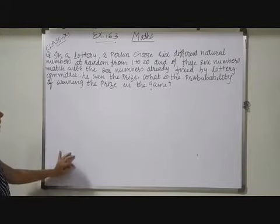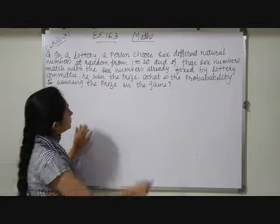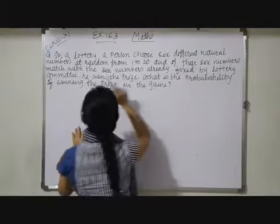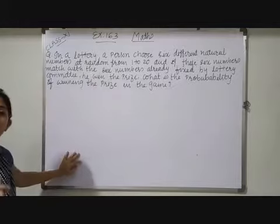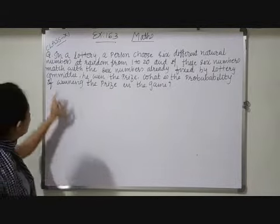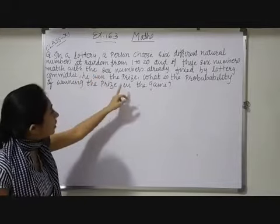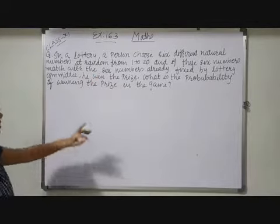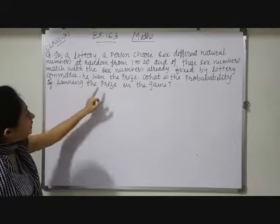Here a question is, in a lottery a person chooses 6 different natural numbers at random from 1 to 20. And if the 6 numbers match with the 6 numbers already fixed by the lottery committee, he wins the prize.